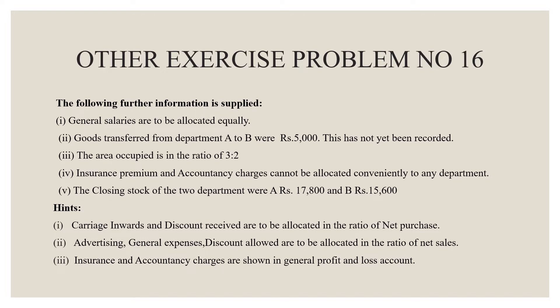Closing stock for Department A is 17,800 and for B is 15,000. Discount received is to be allocated in the ratio of net purchases, where net purchase is purchase less purchase returns. Advertising, general expenses, and discount allowed are to be allocated in the ratio of net sales — that is, sales less sales returns.